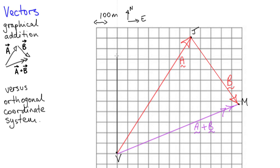Now imagine my programmable drone is only allowed to fly along the grid lines. Then to get from my office to Joe's office it has to fly 11 squares north and seven squares to the east. It doesn't matter what order it flies these east and north steps — there will always be the same number in each of those two orthogonal directions.